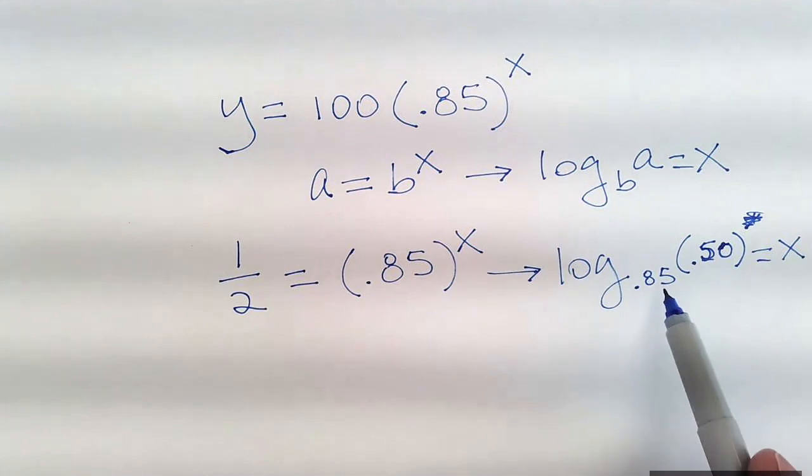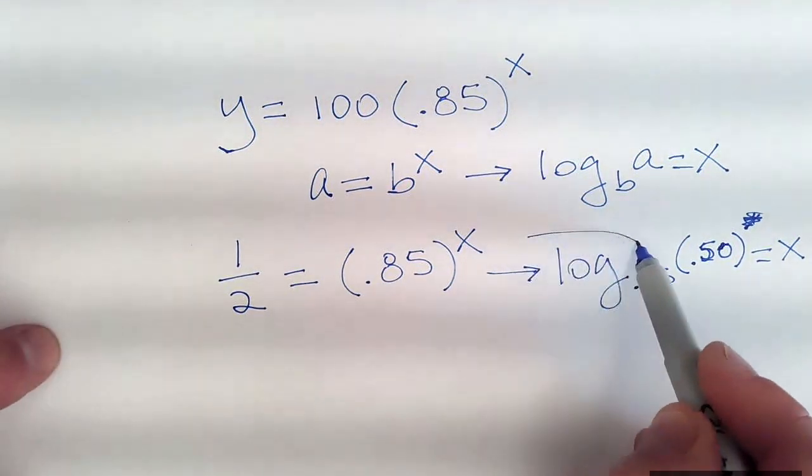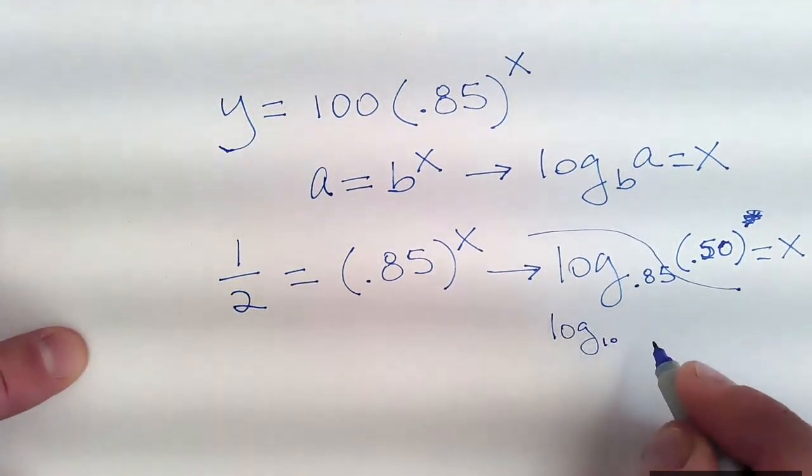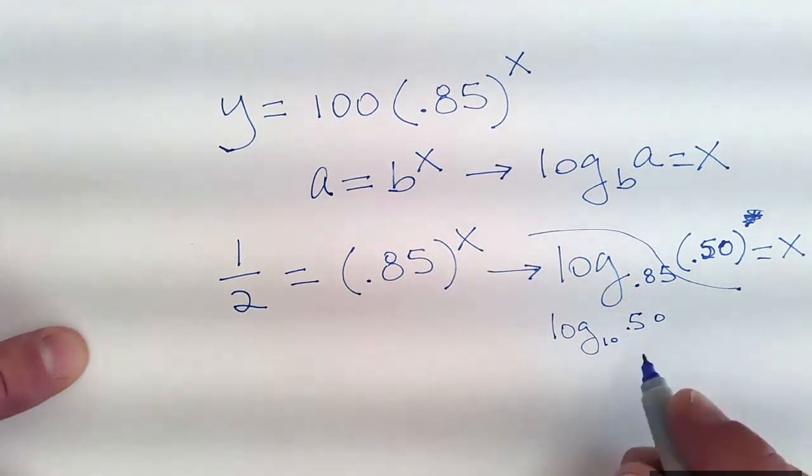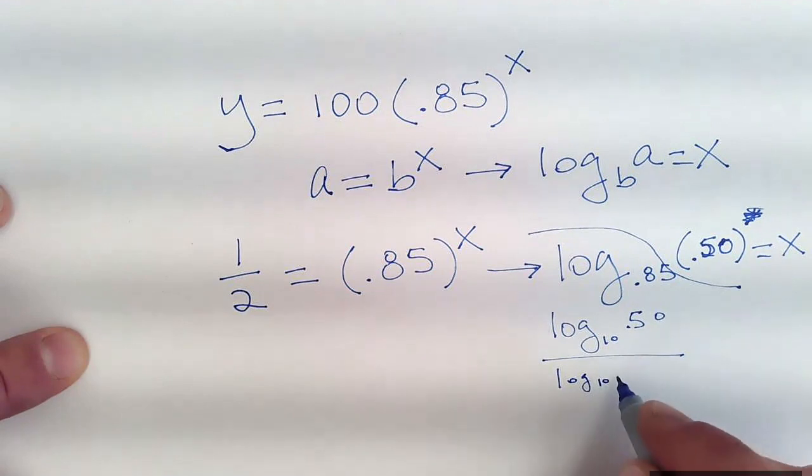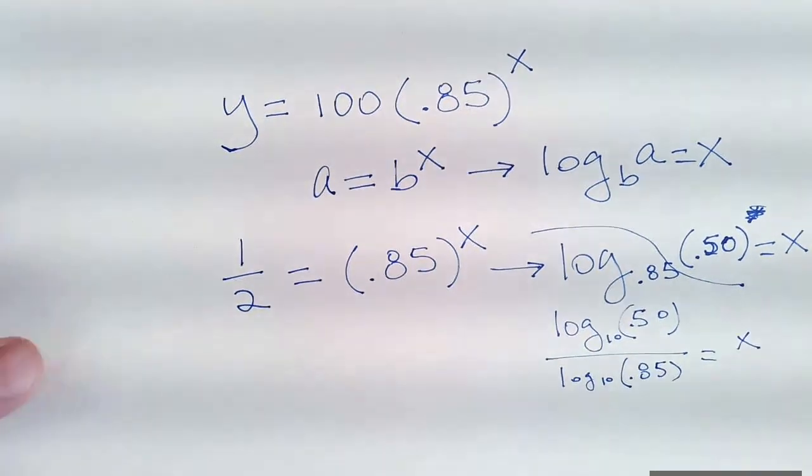Exponential form converted to logarithmic form. Now, I don't have base 85 hundredths in the calculator. I can show you how to do it without doing the workaround. The workaround is the change of base rule. It says log of some base of the argument divided by log of the same base of the original base also equals x.